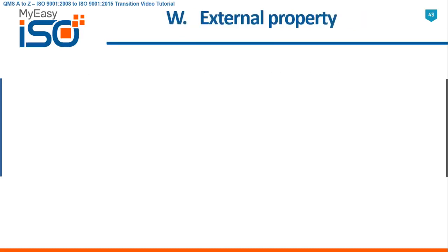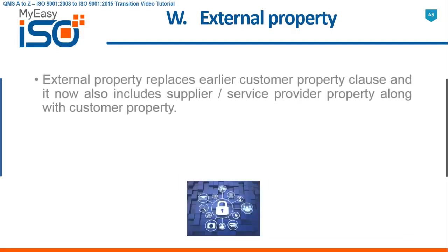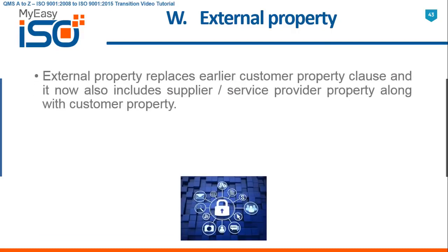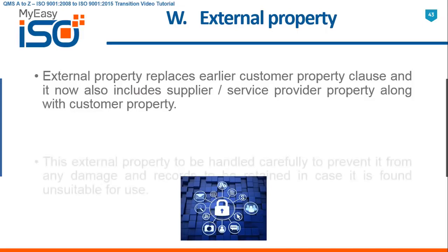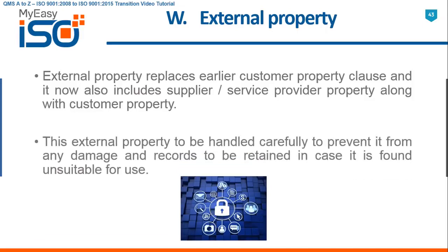W — External Property. External Property replaces the earlier Customer Property clause, and it now also includes supplier and service provider property along with customer property. This external property is to be handled carefully to prevent it from any damage, and records are to be retained in case it is found unsuitable for use.